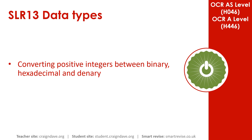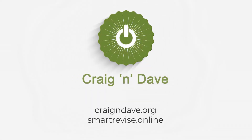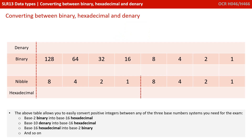In this video we're going to be going over how to convert positive integers between binary, hexadecimal and denary. The table above allows us to easily convert positive integers between any of the three base number systems you need for the exam: base 2 to 16, 10 to 16, 16 to 2, and so on.